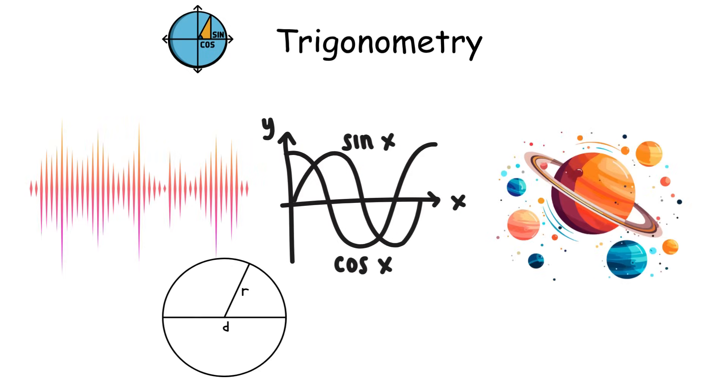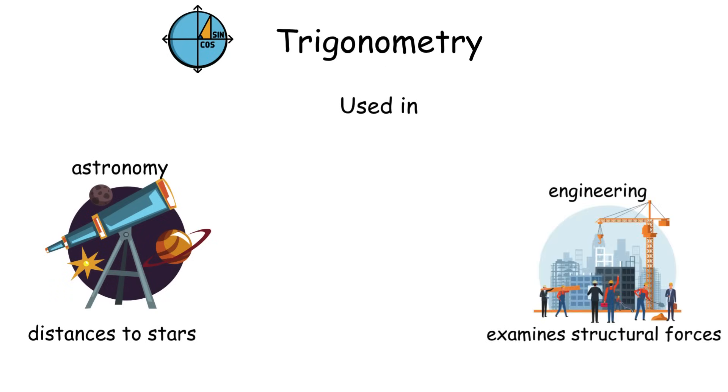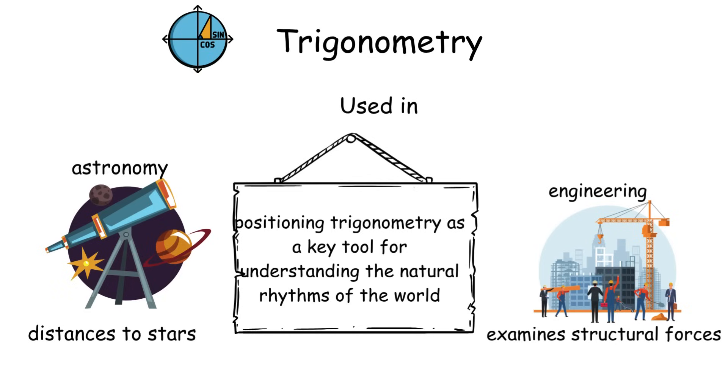Advanced trigonometry models repeating phenomena, such as sound waves and planetary movements, through equations that represent cycles. Its uses extend to fields like astronomy, where it calculates the distances to stars, and engineering, where it examines structural forces, positioning trigonometry as a key tool for understanding the natural rhythms of the world.